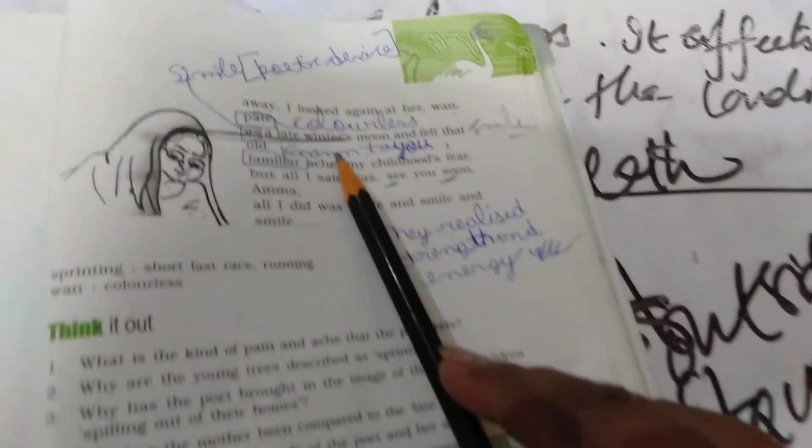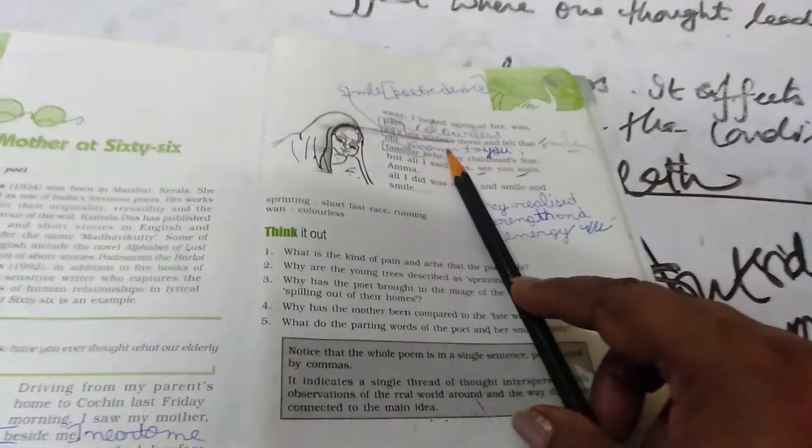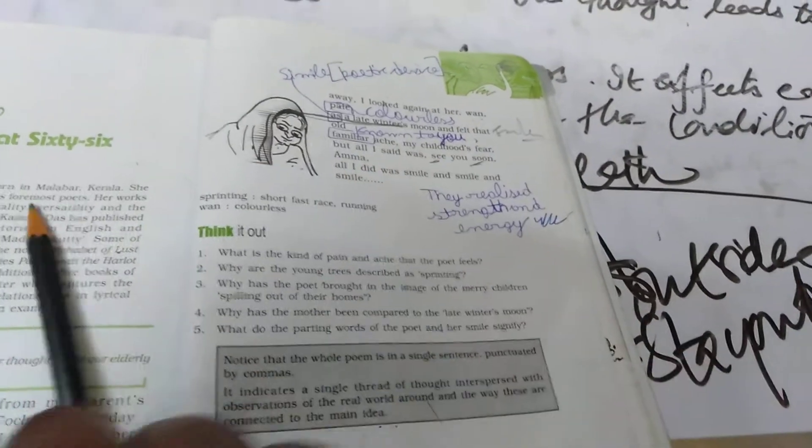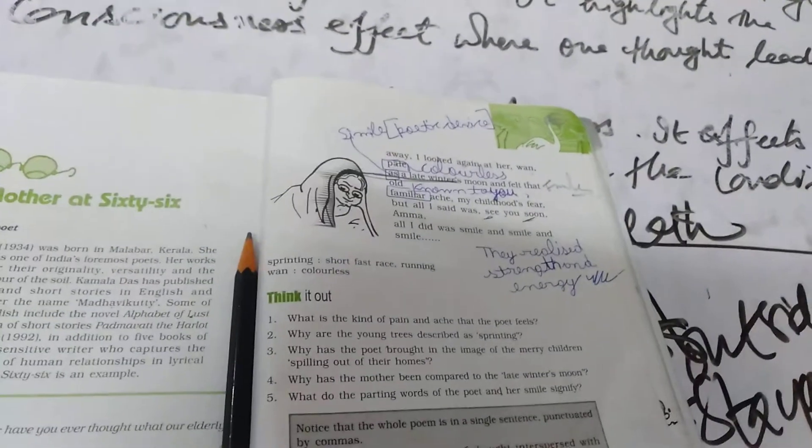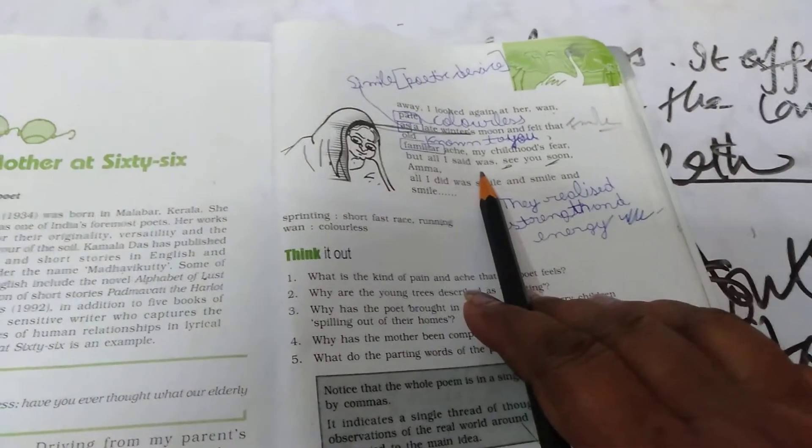So at that moment, that dullness is compared to the dullness of the mother. She is appearing like the late winter's moon and felt that old familiar ache. Old familiar ache means old familiar thought. The thought of what? The thought of losing her mother.